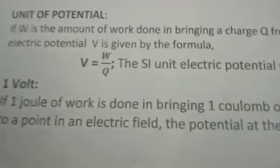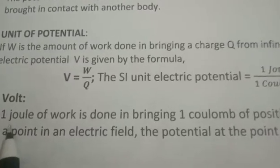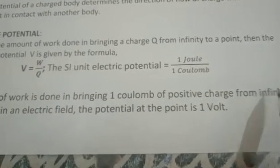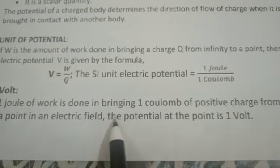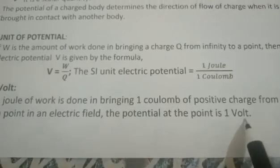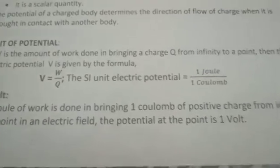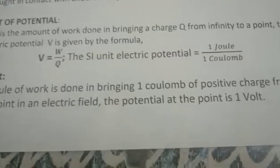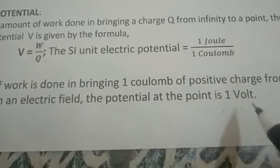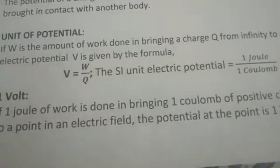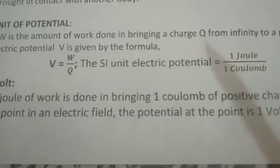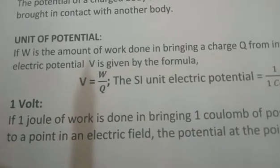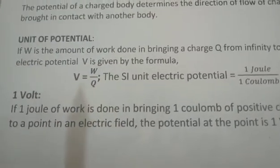We can now define one volt as: if one joule of work is done in bringing one coulomb of positive charge from infinity to a point in an electric field, the potential at that point is one volt. So to define one volt, you need one joule of work done and one coulomb of positive charge. That's all for today — we will continue the topic in the next class. Thank you.